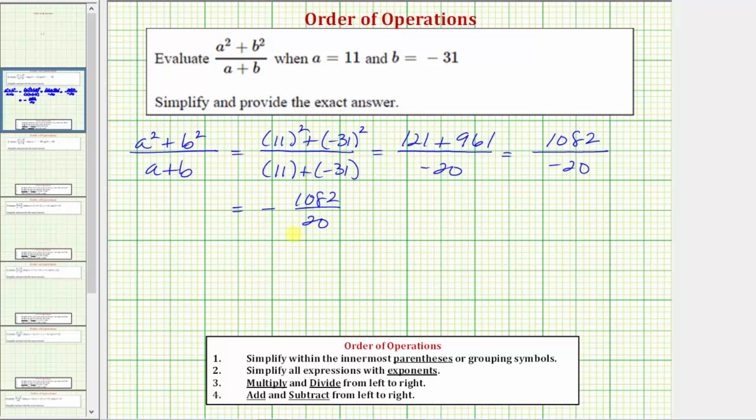To express the exact value as a fraction, we need to simplify the fraction as much as possible. Because the numerator and denominator are both even, we know there's a common factor of two. To show the common factor of two, let's write 1082 as two times 541, and let's write 20 as two times 10.